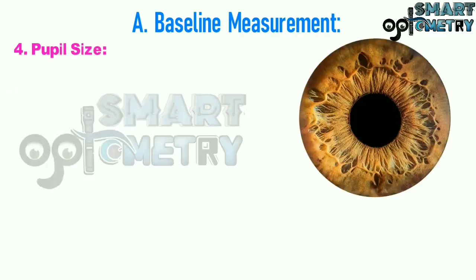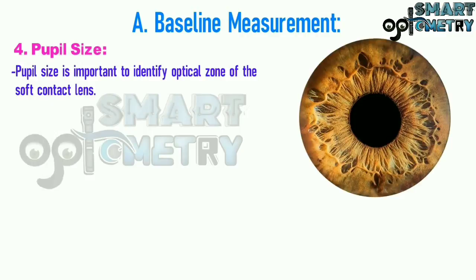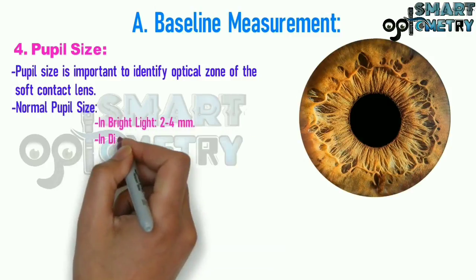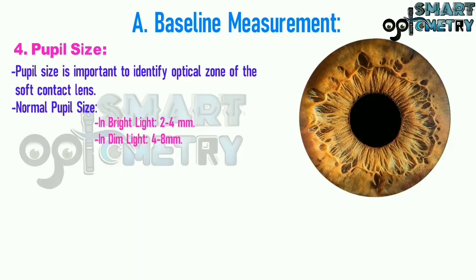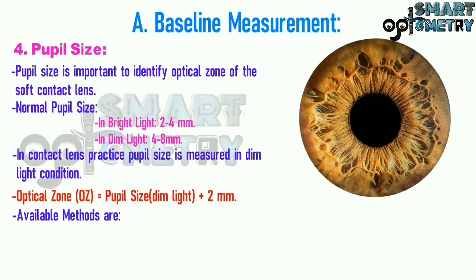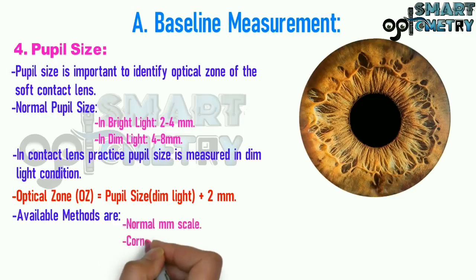4) Pupil size: Pupil size is important to identify the optical zone of the soft contact lens. Normal pupil size in bright light condition is 2 to 4 mm, and in dim light condition is 4 to 8 mm. In contact lens practice, pupil size is measured in dim light. The optical zone equals pupil size in dim light plus 2 mm. Available methods include normal millimeter scale, corneal topographer, and Barnard scale.